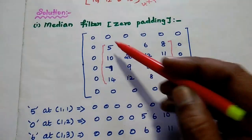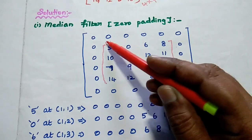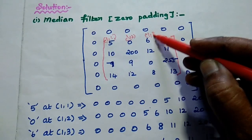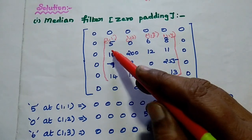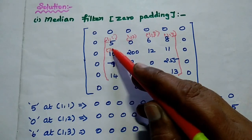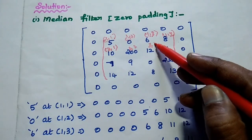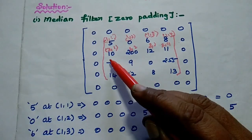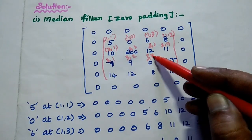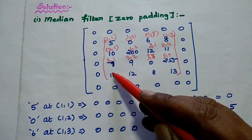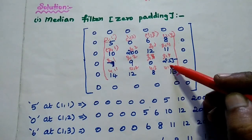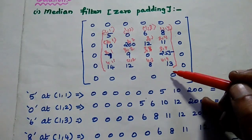We can consider the location of this image starting at 1,1 — that is the location of the first pixel. Then 1,2; 1,3; 1,4. The location is very important. We are going to consider only within this segment. Then 2,1; 2,2; 2,3; 2,4. Likewise 3,1; 3,2; 3,3; 3,4. And 4,1; 4,2; 4,3; 4,4. These are the spatial locations of the pixel values.